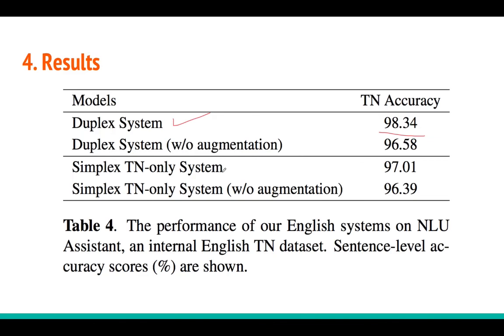For the results with and without data augmentation: for the duplex model, adding data augmentation gives almost 2% improvement; for simplex, about 1% improvement. That's all for this tutorial.